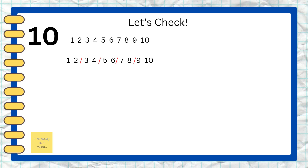Can we test it? Let's check number 10. Shall we make groups of two to check whether number 10 is an even number? Let's count: one, two, three, four, five, six, seven, eight, nine, ten. Now I'm going to mark them in pairs: one-two, three-four, five-six, seven-eight, nine-ten. Number 10 can be divided in groups of two evenly and there is no number left alone.